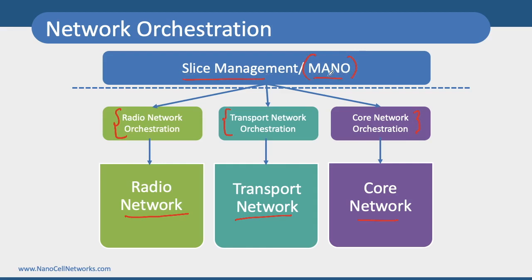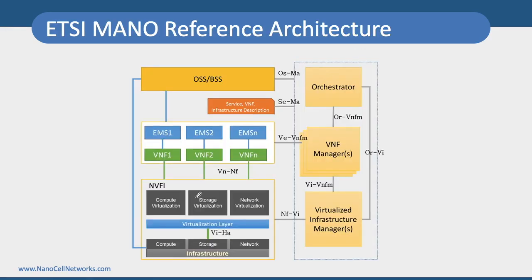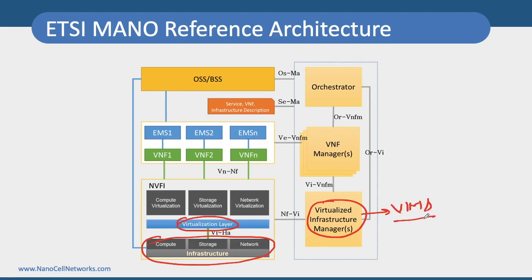Looking at the MANO architecture, at the lowest layer we have the physical infrastructure. On top of that we have a virtualization layer, managed by something called Virtualization Infrastructure Managers, or VIMs. The virtualized infrastructure can be instantiated into Virtual Network Functions, or VNFs. On top of this, we have Element Management Systems, or EMS, which are used for managing individual VNFs.